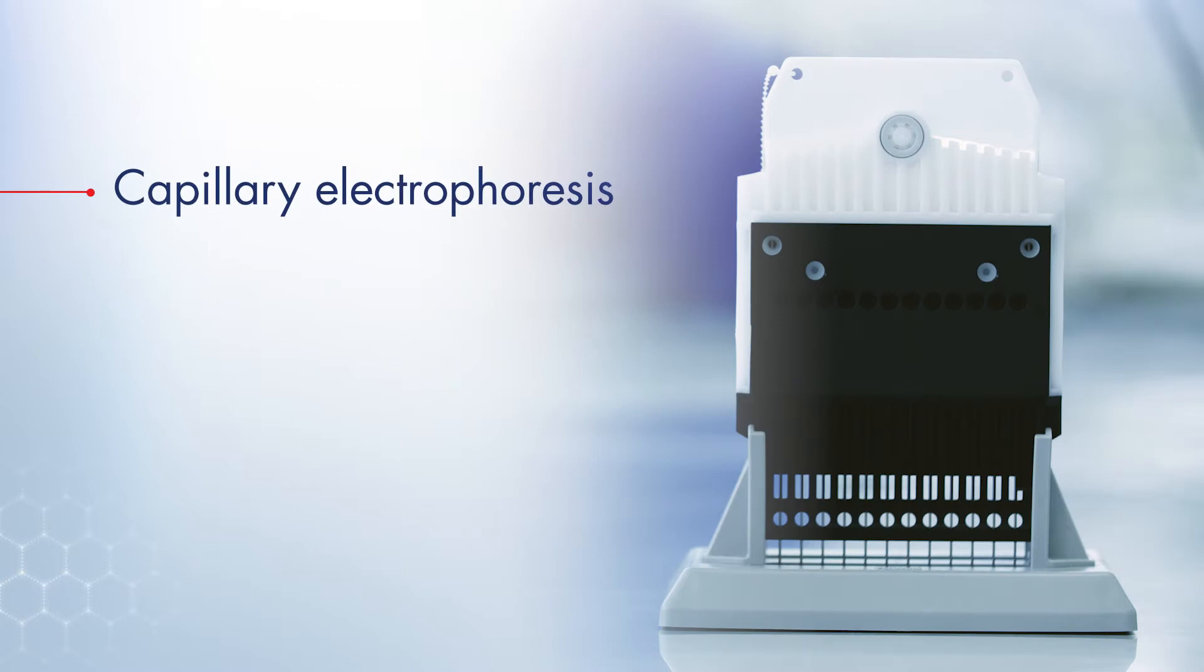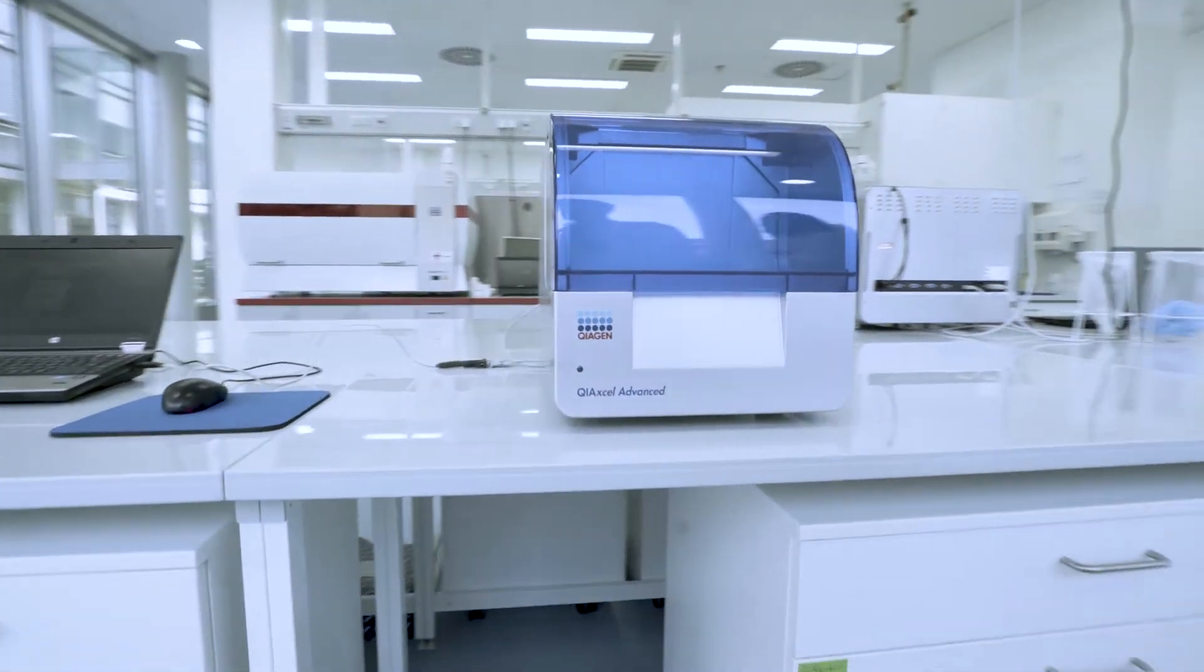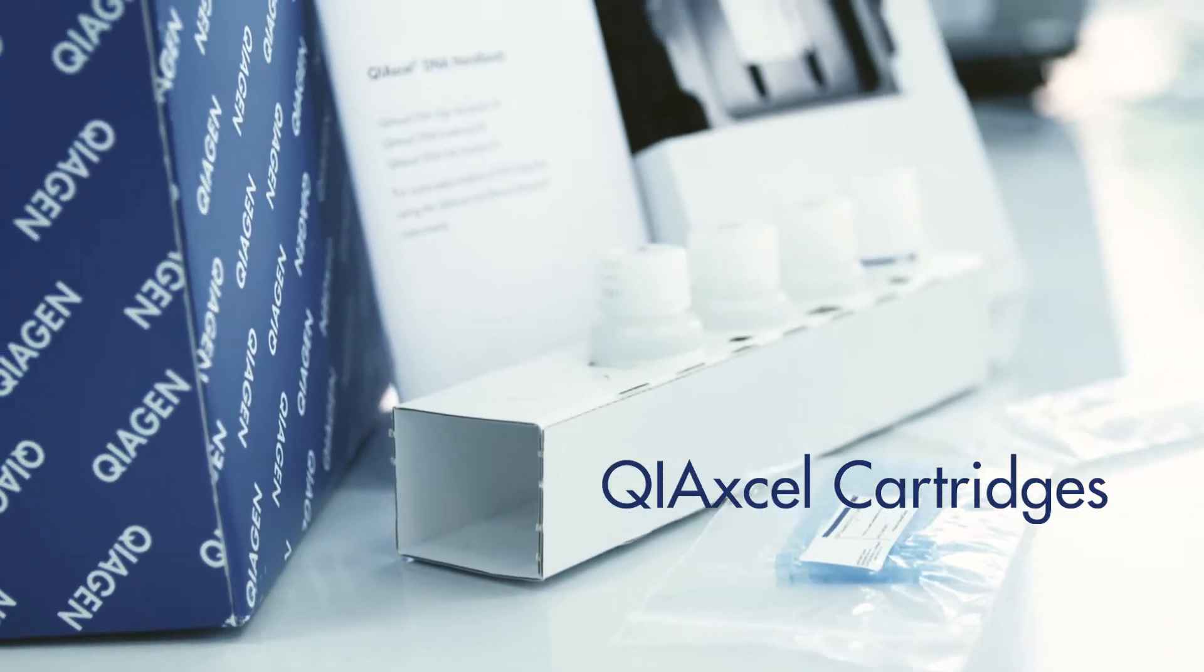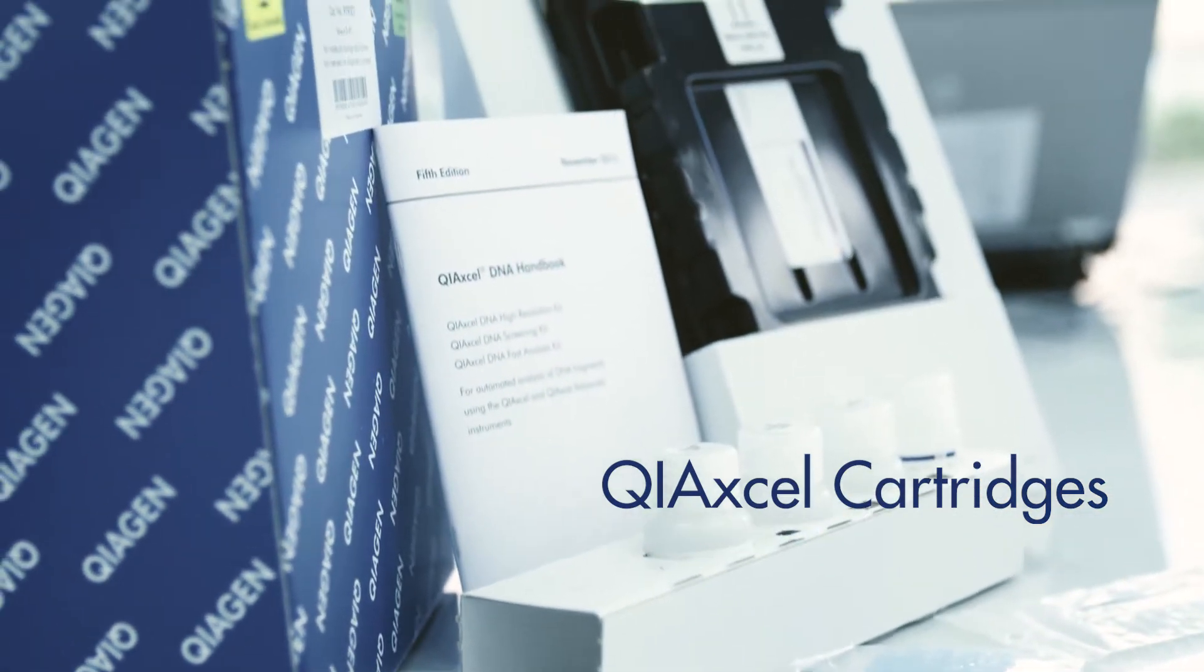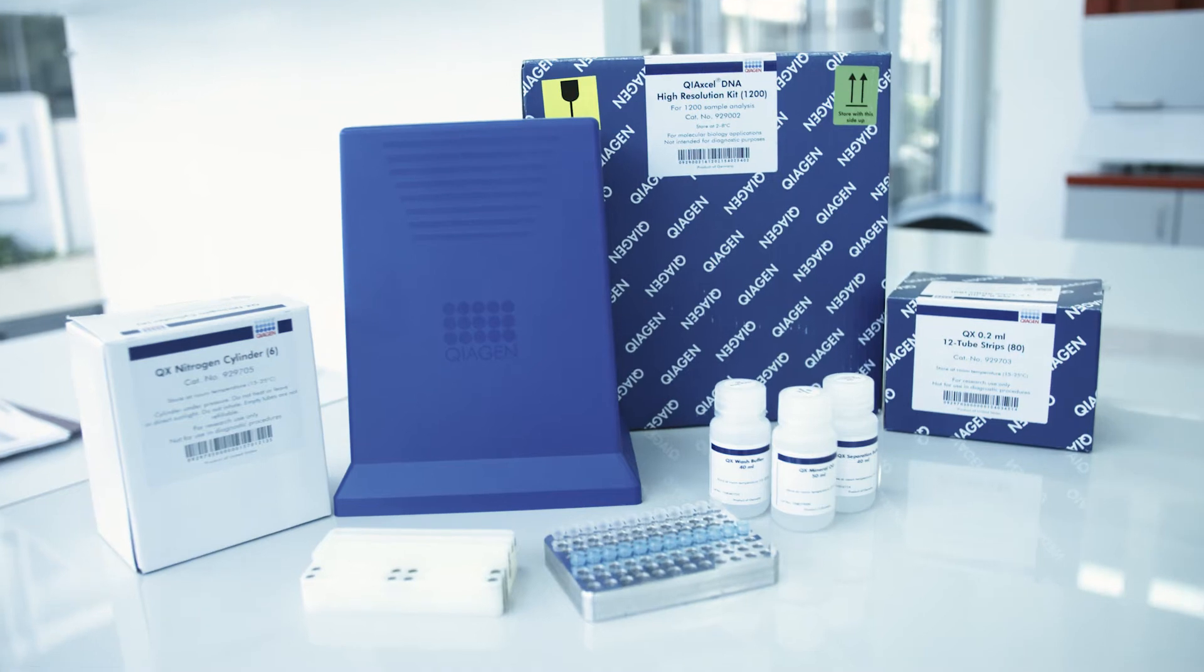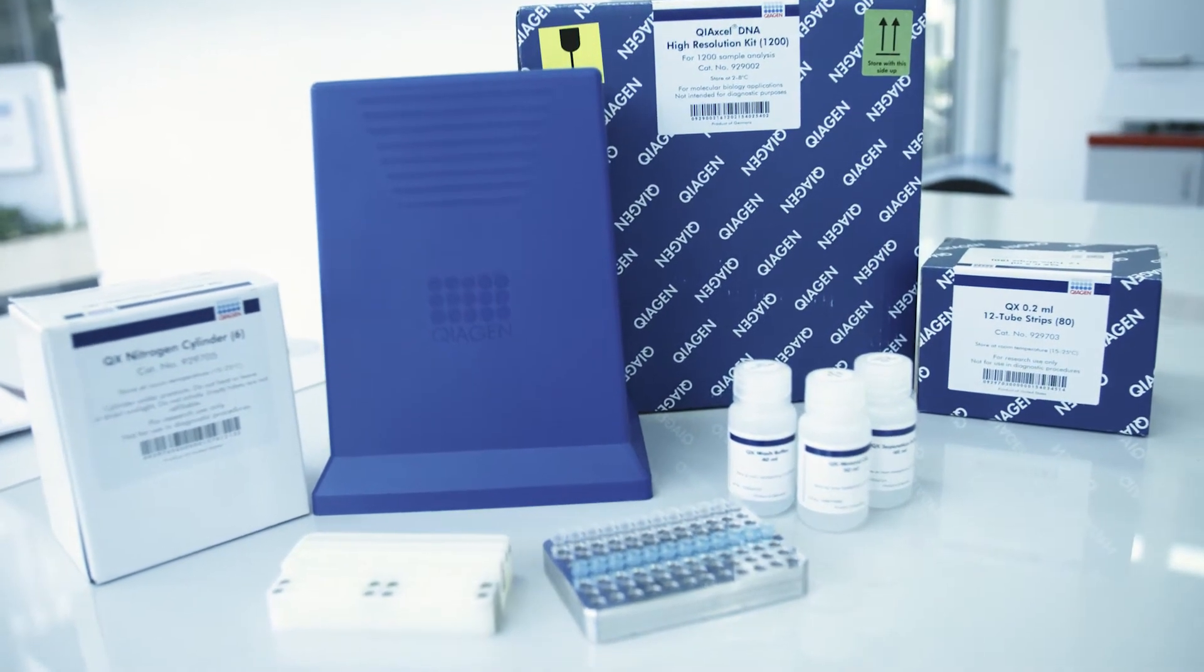Capillary electrophoresis separates analytes within a gel when an electric field is applied. To run Kaixcel Advanced, you will need Kaixcel cartridges that are specific for your applications and the QX nitrogen cylinder. You can analyze between 12 and 96 samples per run.